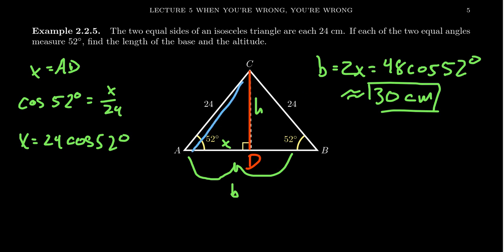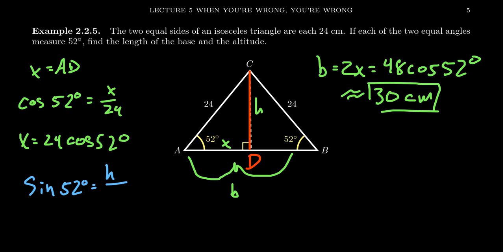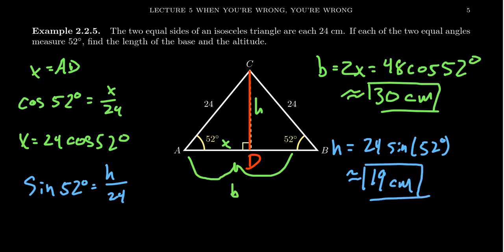What about the height? Looking at the right triangle again, with respect to angle A, the height H is the opposite side, and the hypotenuse is still 24. Using the sine ratio, sine of 52 degrees equals H over 24. Clearing denominators, H equals 24 times sine of 52 degrees. Using our calculator — make sure you're in degree mode — and rounding to the nearest centimeter, we get 19 centimeters as the length of the altitude, the height of the triangle.